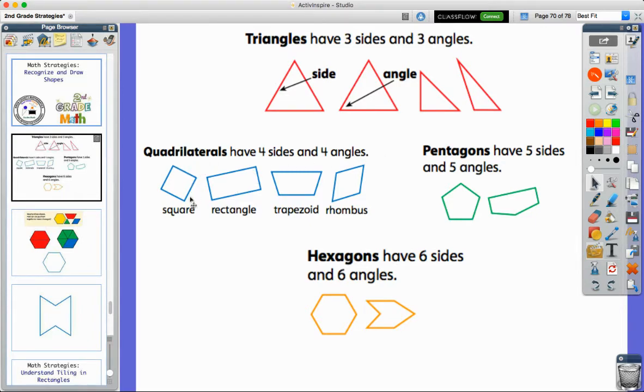We know squares and rectangles have four sides. There are also two more shapes that fall into this category of four sides and four angles: trapezoids and rhombuses. These might be new shapes for you. Sometimes you may have seen a rhombus called a diamond. These are all quadrilaterals because they have four sides and four angles.